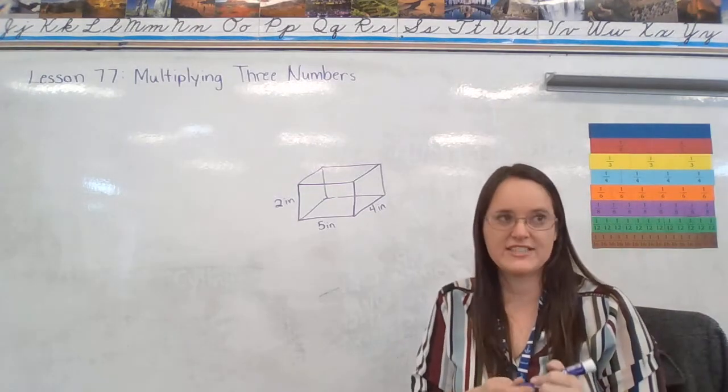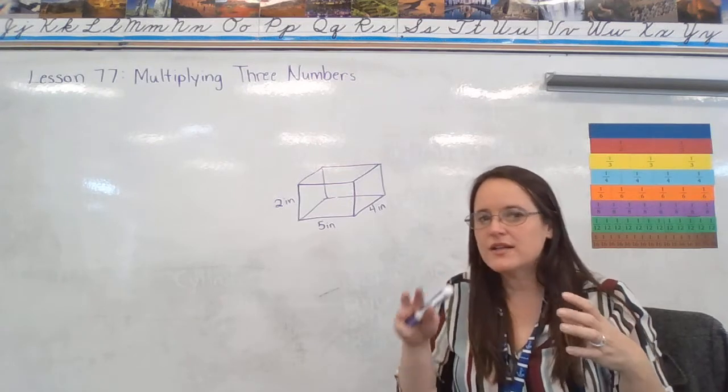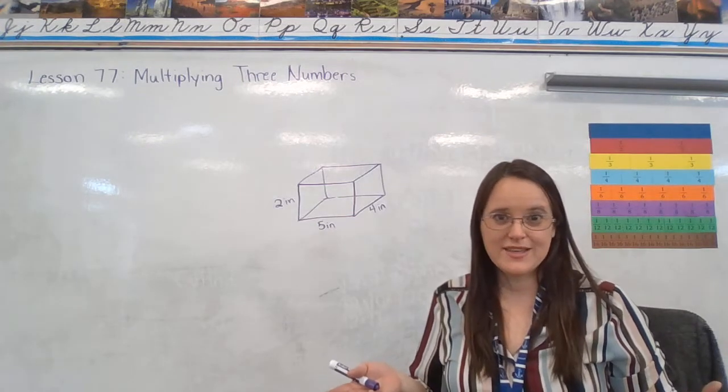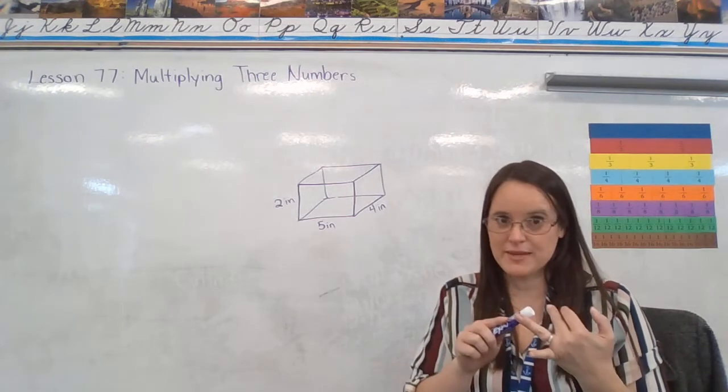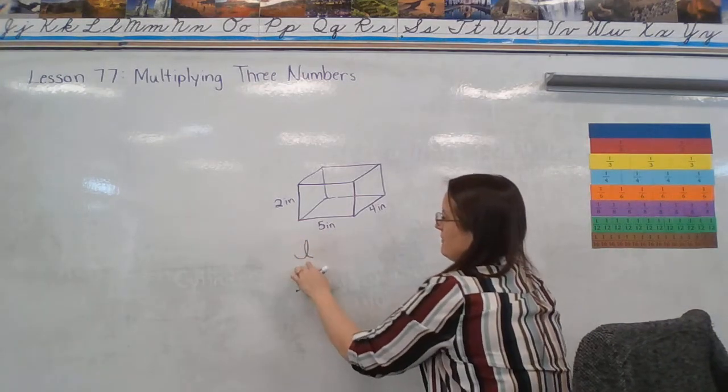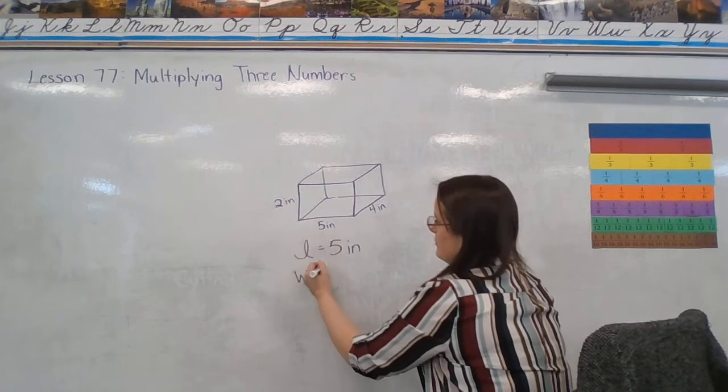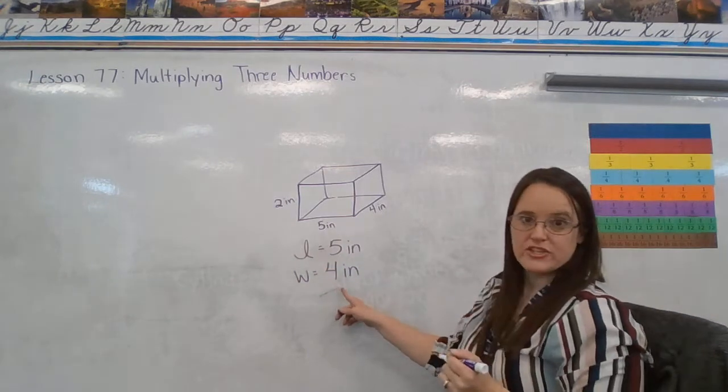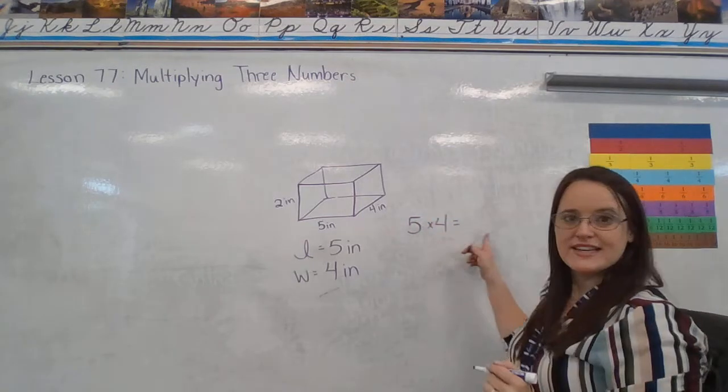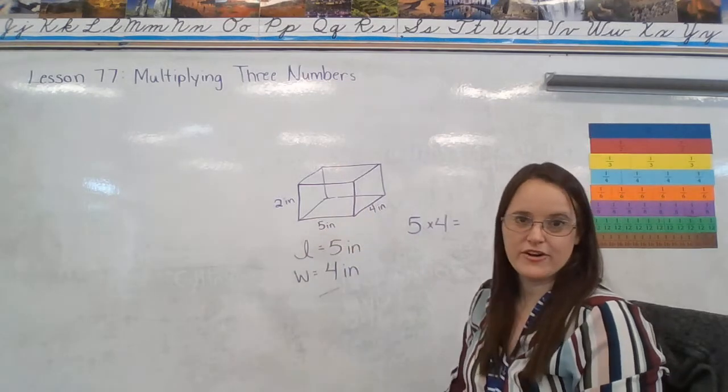In the past, we have taken this type of problem and we've said, okay, so how many blocks are going to make up a layer? How did we do that? We multiplied length times width. So we want to take our length, L for length, which is 5 inches. Our W for width, which is 4 inches. And if we do 5 times 4, that tells us how many square inches are in one layer of our box.